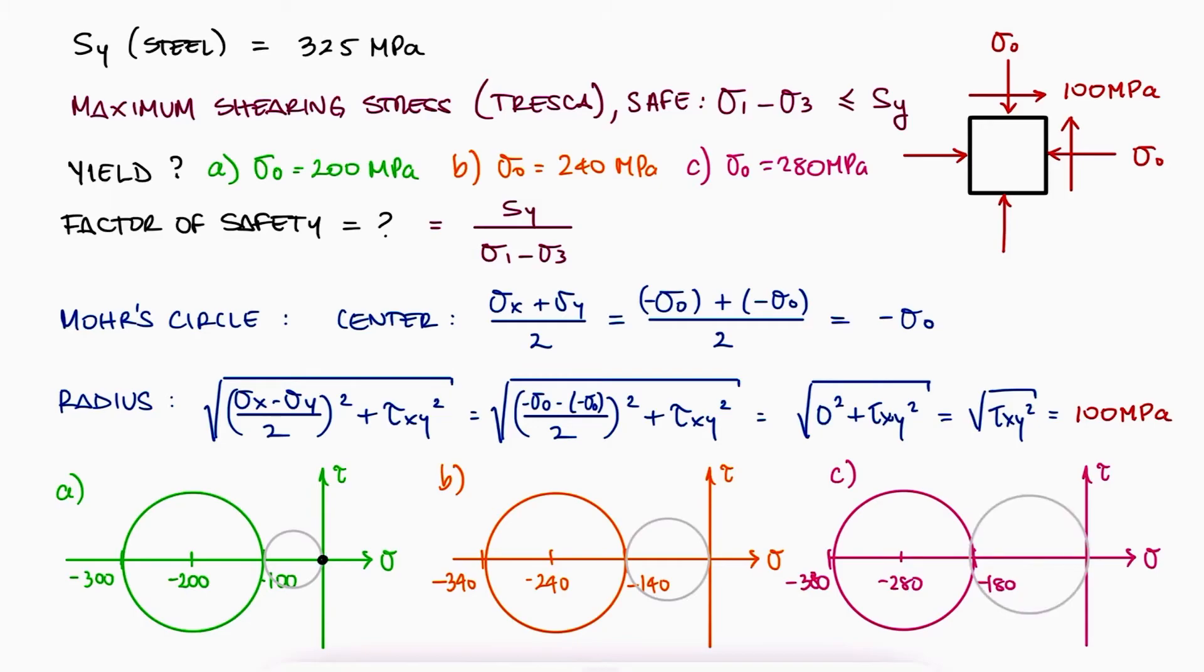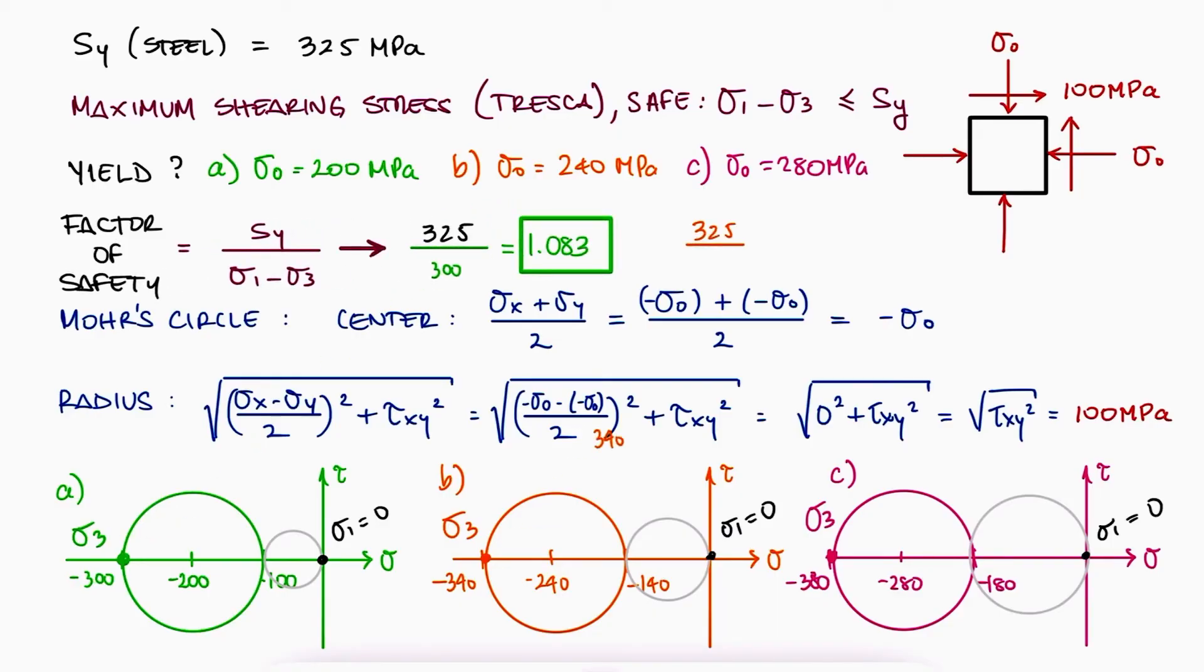Since one of the three principal stresses is zero, the difference between σ1 and σ3 is the absolute value of σ3. For each one of the three cases, the factor of safety would be 1.08 for case A and values lower than one for cases B and C.